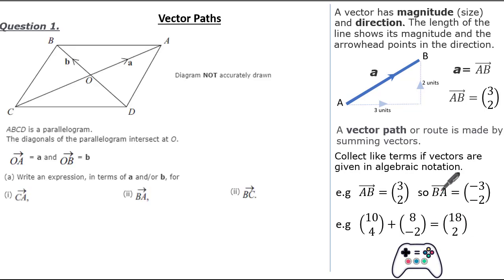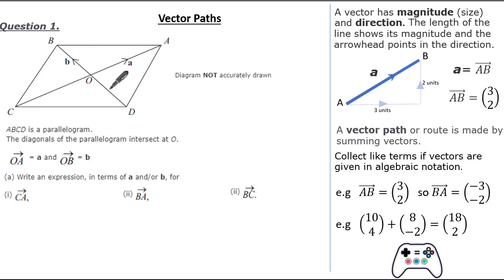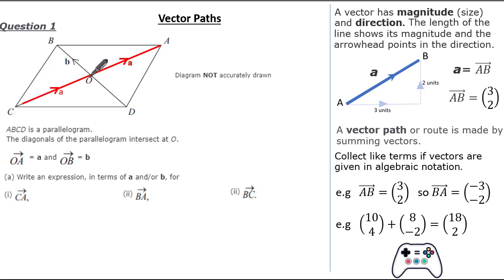So now we have some basic knowledge on vectors and vector paths, let's apply it to some past exam questions. Here the question shows us a parallelogram ABCD, and the diagonals intersect at the vertex O. We're given the vector O to A is vector a, and we're given the vector O to B is vector b. The question states that we need to write an expression in terms of a and b for the vector CA, the vector BA, and the vector BC. Remember, vectors can be anywhere with the same direction and magnitude. So when the question says it's a parallelogram, this means the vector O to A is not just here but also here as well, as we know the length C to O is exactly the same as O to A.